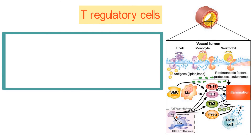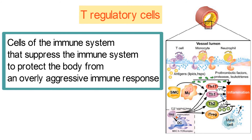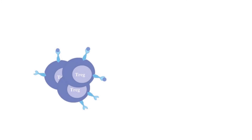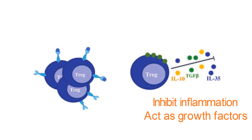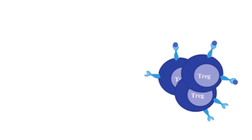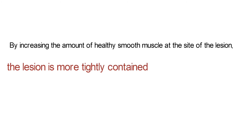For example, T regulatory cells are cells of the immune system that suppress the immune system to protect the body from an overly aggressive immune response. If T regulatory cells accumulate in a lesion, they can secrete chemical messengers that inhibit inflammation, and some of these chemical messengers can act as growth factors for healthy smooth muscle in the vessel wall. By increasing the amount of healthy smooth muscle at the site of the lesion, the lesion is more tightly contained and rupture is unlikely.